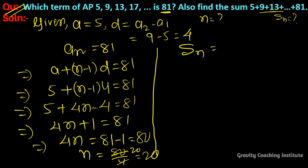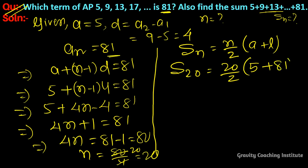Now for sum, Sn = n/2(a + l). We have n = 20, so S20 = 20/2(5 + 81) = 10 × 86.